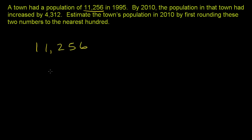We need to round to the nearest hundred. So let's look at the hundreds place here. This is either going to go down to 200 or go up to 300, depending on the next lowest place. So we go down to the tens place and we see a 5. 5 is 5 or greater, so we want to round this number up.